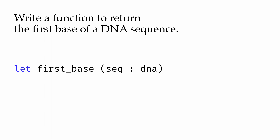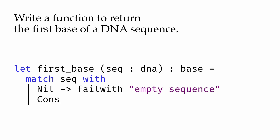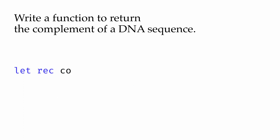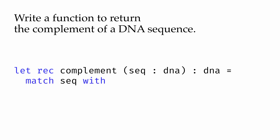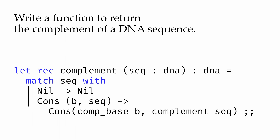We could now define functions that work with our DNA type. We could write a function first_base that gets the first base out of a DNA sequence. We match the DNA sequence — if it's nil, it has no first base, so we use the failwith function to raise a failure exception. Otherwise, if it's the cons of a base and another sequence, we return that first base. We could also write a complement function to take the complement of a DNA sequence by pattern matching: if the sequence is nil, the complement is just nil; and if the sequence is cons of a base B and a remaining sequence, then the complement is cons of the complement of B and the complement of the remaining sequence, computed recursively.